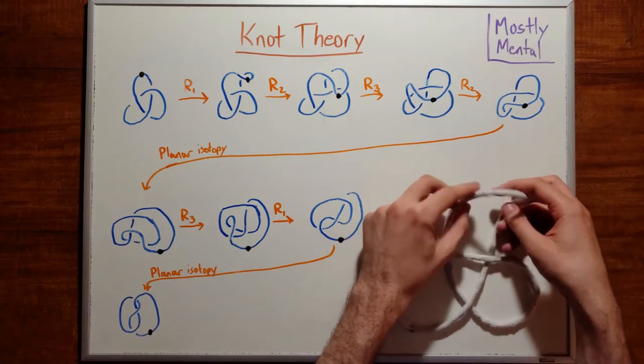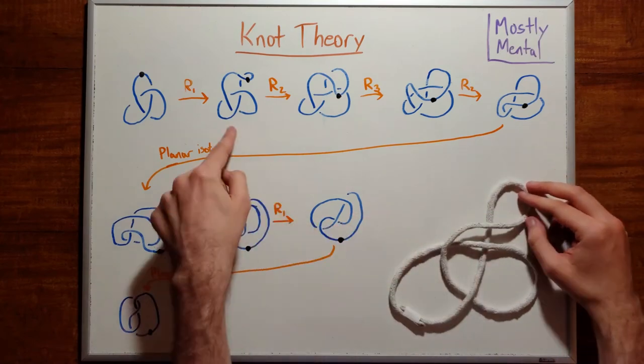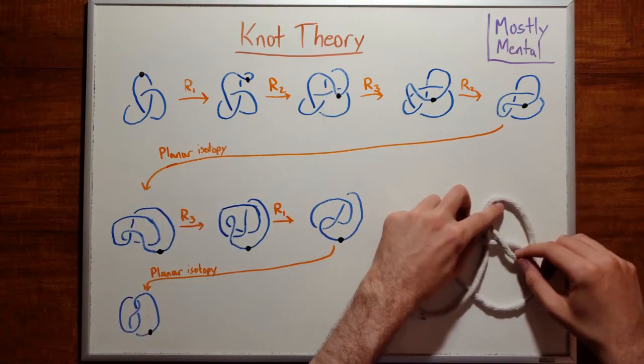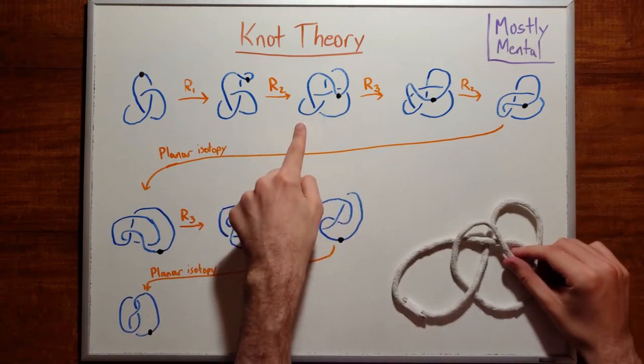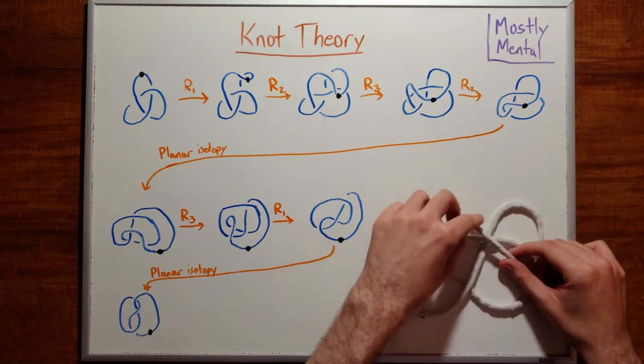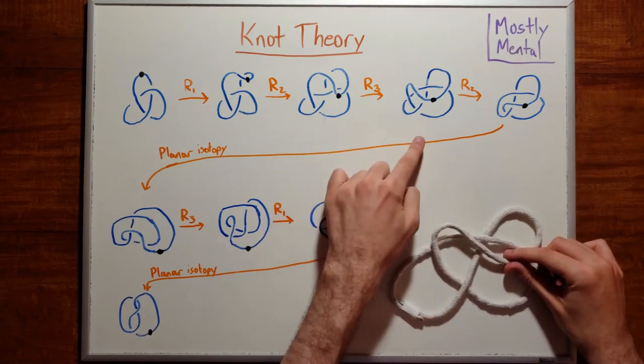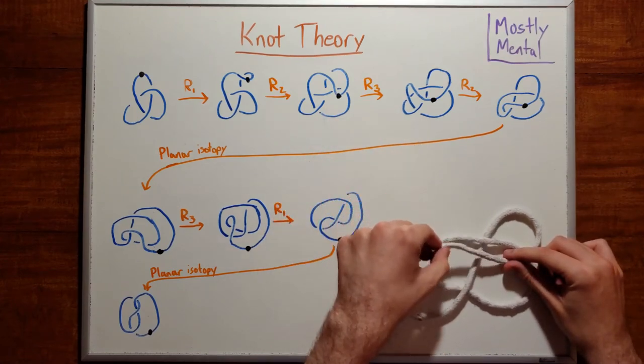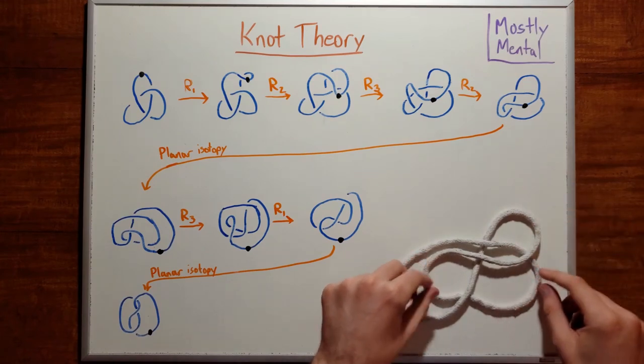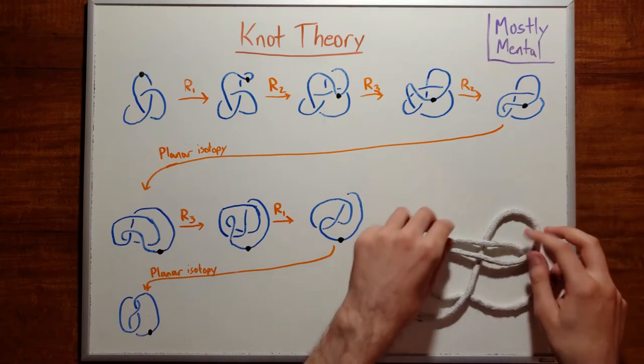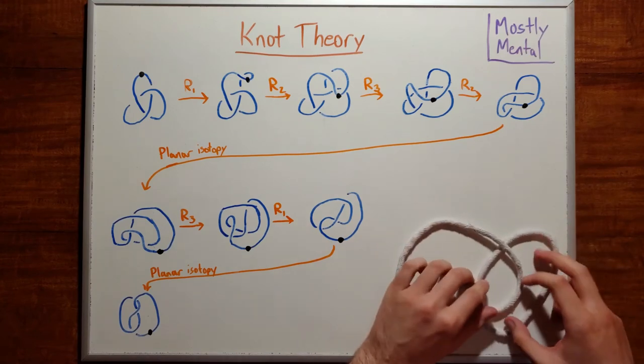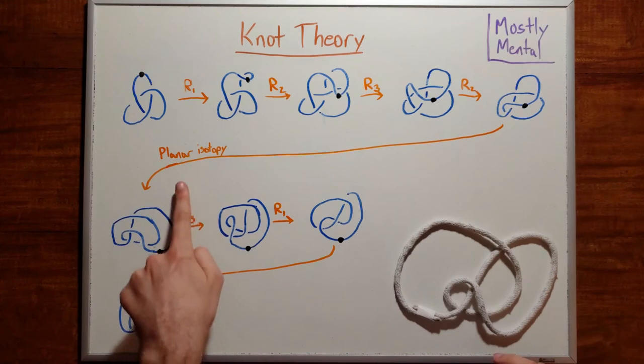We'll start by adding a loop with R1, and then we'll take this strand across this one with R2. We'll move this strand over this crossing with R3. We'll move this strand over this strand with another R2. And then this is getting a little messy, so let's just rearrange here. We aren't changing any of the crossings, so this is just planar isotopy.